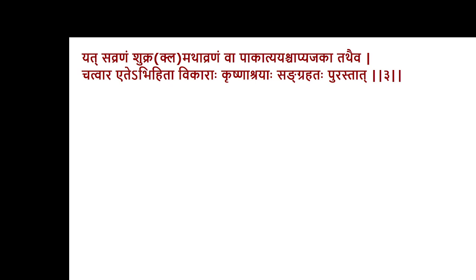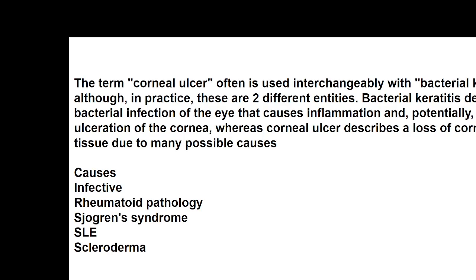From the Saurana and Avrana Shukra, quite obviously that's what we call as a corneal ulcer. The term corneal ulcer is used interchangeably with bacterial keratitis — that's the other name for it. Although in practice these are two different entities. Bacterial keratitis denotes a bacterial infection of the eye causing inflammation and potential ulceration of the cornea, whereas corneal ulcer describes loss of corneal tissue due to many possible causes.